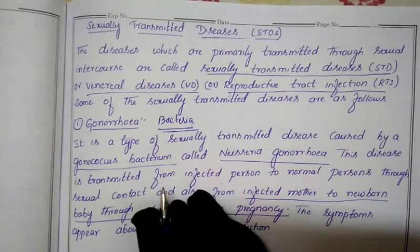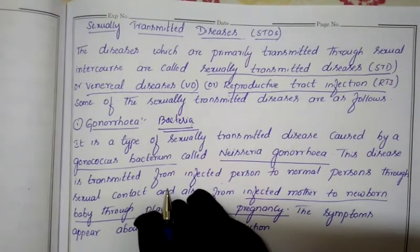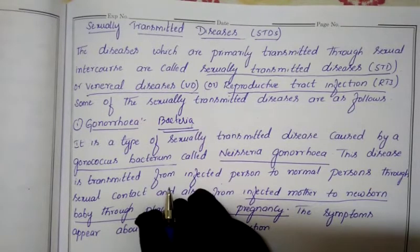Couples who opt for the permanent method undergo a surgical operation. In the male, they cut the vas deferens, and in the female, they cut the fallopian tube, thereby preventing conception or pregnancy.